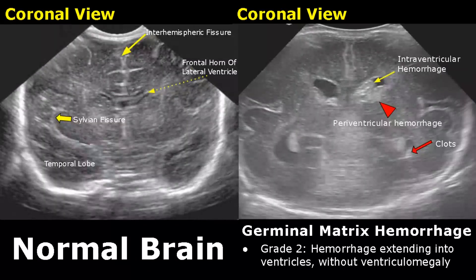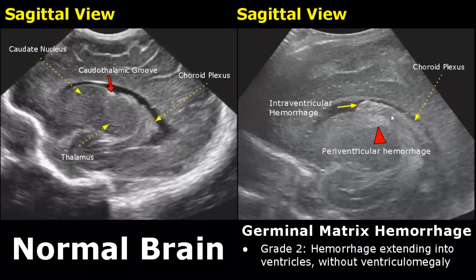In grade two, the hemorrhage will extend into the ventricles but without ventriculomegaly. There are clots outside and inside the ventricles. This is a sagittal view of grade two germinal matrix hemorrhage — we see clots inside and outside the ventricle.